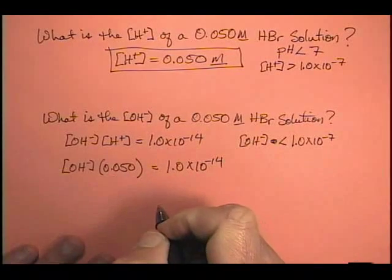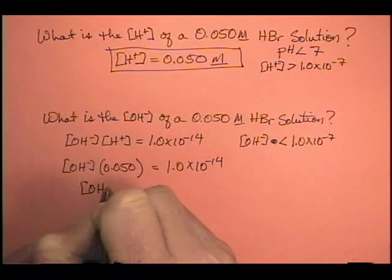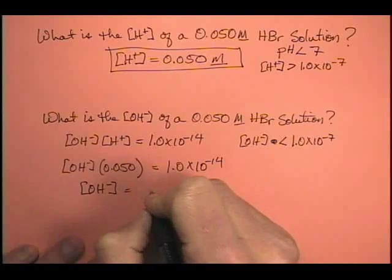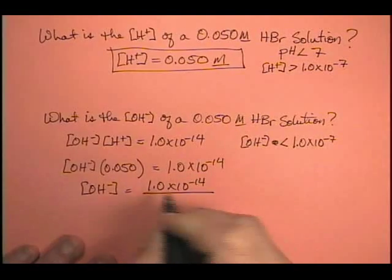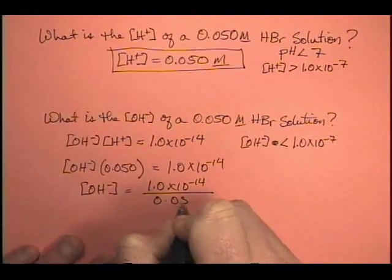And we know how to do our algebra, so our hydroxide ion concentration is equal to 1.0 times 10 to the minus 14th, divided by 0.050.